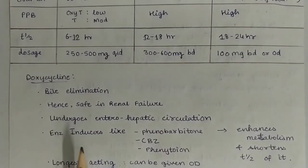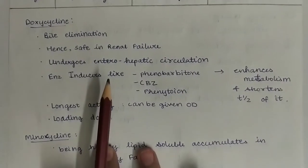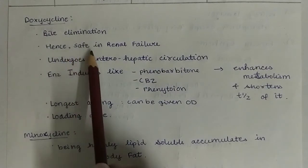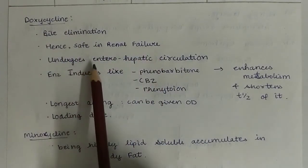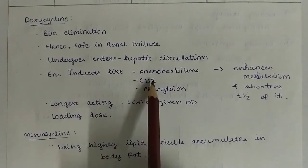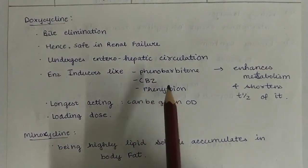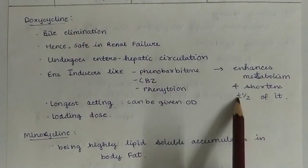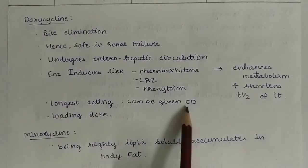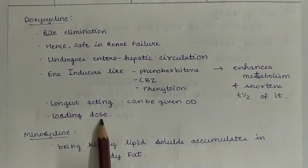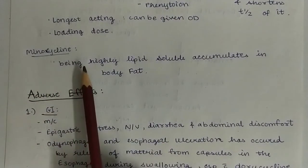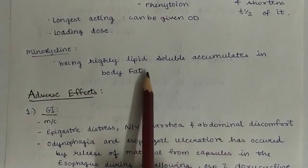Next, some pharmacokinetics of doxycycline. It has bile elimination and hence is safe in renal failure. It undergoes enterohepatic circulation. Enzyme inducers like phenobarbitone, carbamazepine, and phenytoin enhance its metabolism and shorten its T-half. It is the longest acting and hence can be given once a day. A loading dose can also be given. Minocycline, being highly lipid soluble, accumulates in body fat.